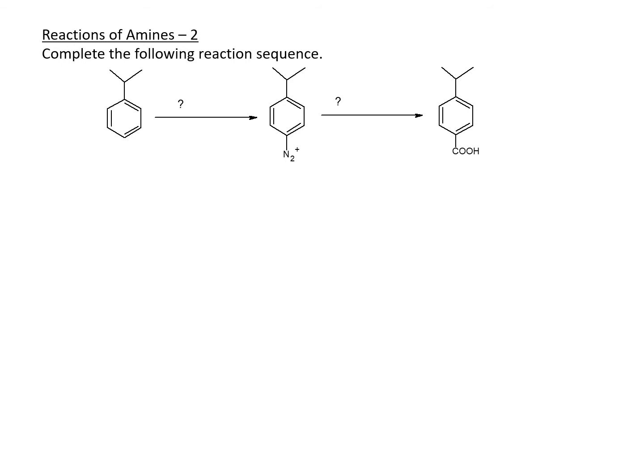Here what we have is para-isopropylbenzoic acid. How do you get a benzoic acid on there without doing the oxidation? An amine group is generally the best answer for this one.